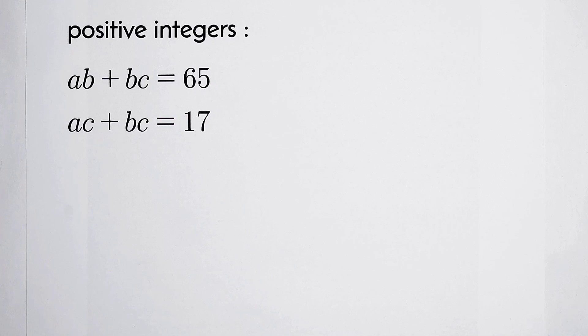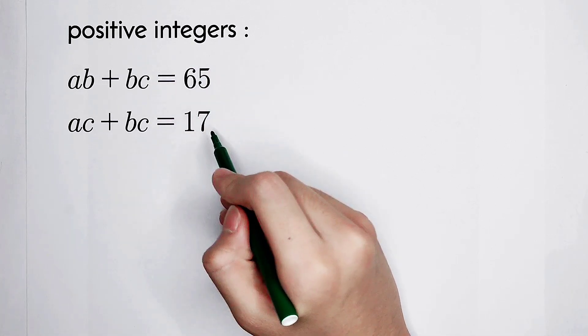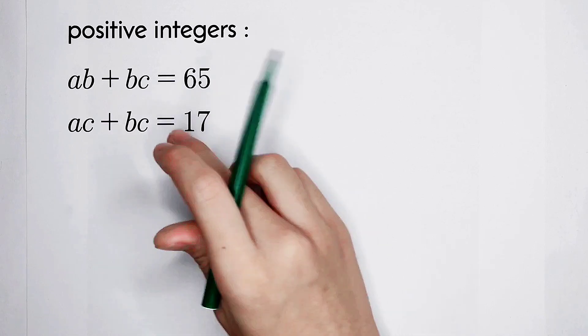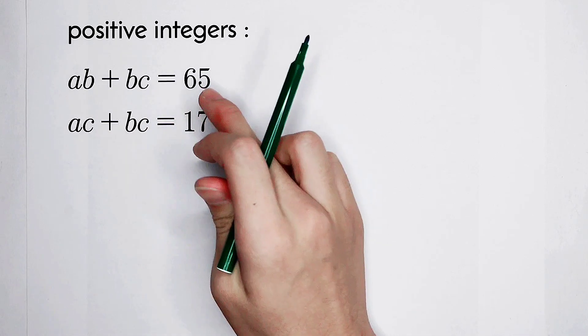Now, what should we do? Have a look at these equations. The first equation, ab plus bc is equal to 65.